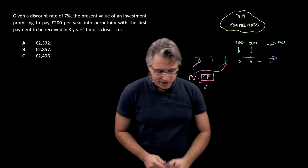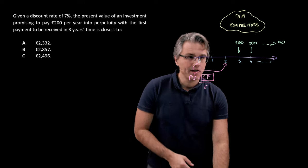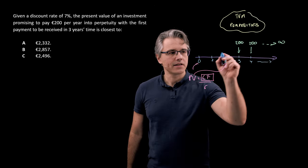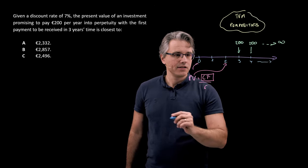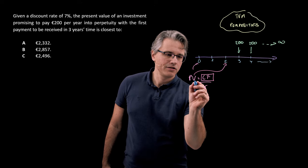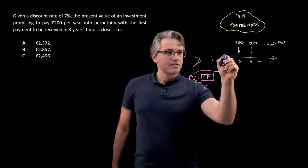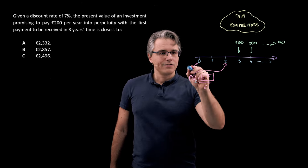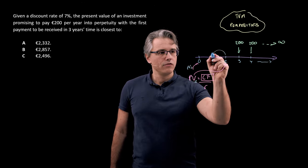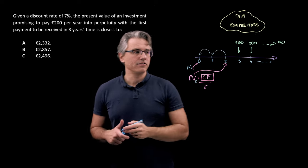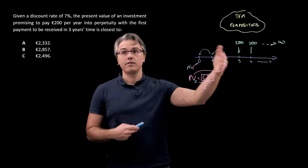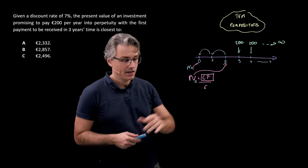So whatever result we get, we're going to have to perform a little bit of discounting, because this gives us the PV at time two of the cash flows starting in period three. To compute the PV at time zero, we're going to discount back to time zero over a period of two years. Let's get the data in.